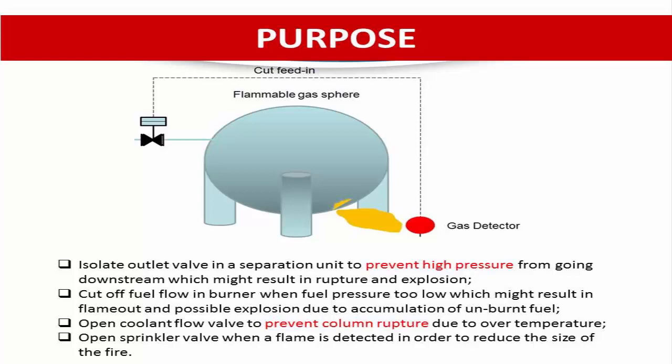Examples of potential safety instrumented functions include: isolating the outlet valve in a separation unit to prevent high pressure from passing downstream, which might result in rupture and explosion; and cutting off the fuel flow to a burner when fuel pressure is too low, which might result in flame-out and possible explosion due to accumulation of unburned fuel in the burner.